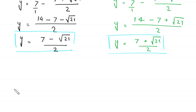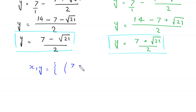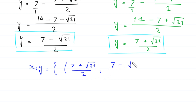So the final set of solutions is: the first pair is x equals (7 plus root 21) over 2 and y equals (7 minus root 21) over 2; and the second pair is x equals (7 minus root 21) over 2 and y equals (7 plus root 21) over 2.